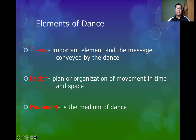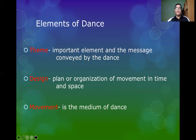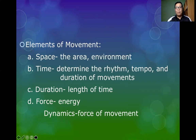The elements of dance include the theme, which is the message being conveyed by the dance. For example, if the dance is intimate, the theme is passion or love; if it is ritual, the theme is about a specific culture. Design is the plan or organization of movement in time and space — the overall picture of how the dance will look, related to choreography. Movement is the medium of dance, comprising individual elements found in a design.